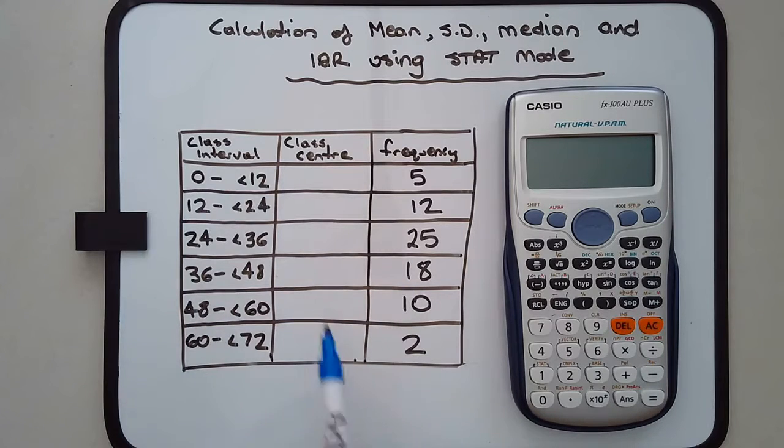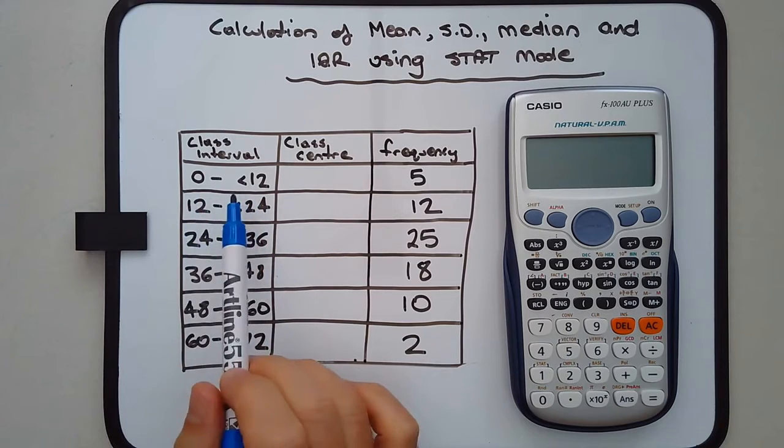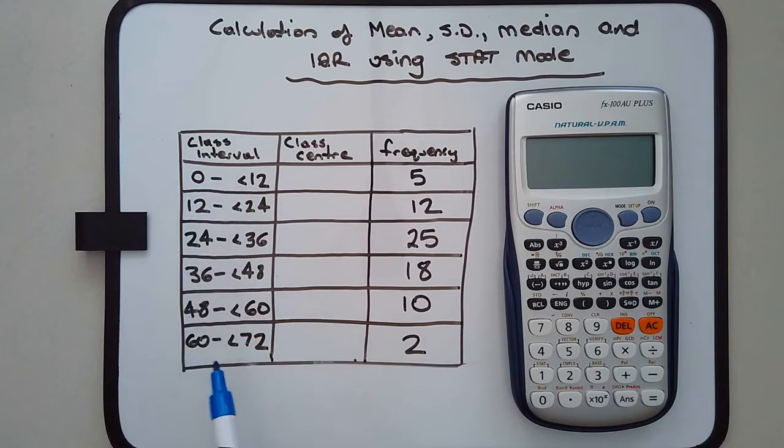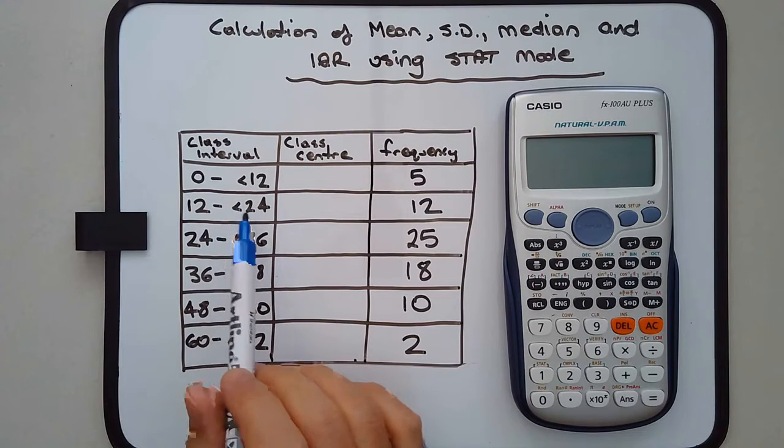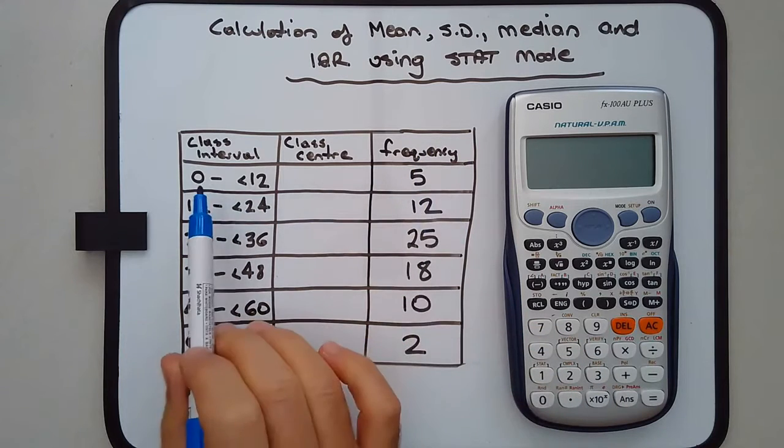We have a table that uses class intervals. I've just come up with some generic random class intervals - the data doesn't mean anything, but it could be age groups or whatever. There's a frequency column here as well, showing how often each interval occurs.